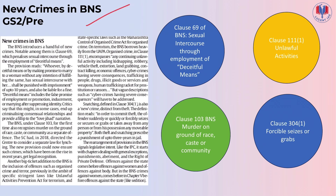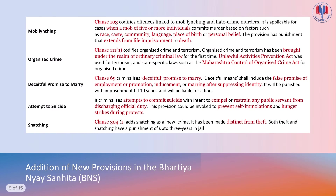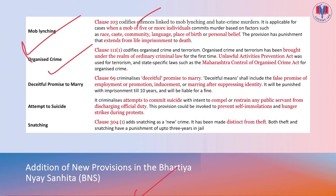New crimes under Bharatiya Nyaya Sanhita include: Clause 69 — sexual intercourse through deceitful means; Clause 111, Sub-clause 1 — various unlawful activities encompassing kidnapping, robbery, vehicle theft, extortion, land grabbing, contract killing, economic offences, cyber crimes, etc. Clause 103 — murder on grounds of race, caste, or community. Clause 304, Sub-clause 1 — forcible seizure or snatching. Clause 103 also codifies mob lynching, applicable when a mob of five or more commits murder based on race, caste, community, language, place of birth, or personal belief.